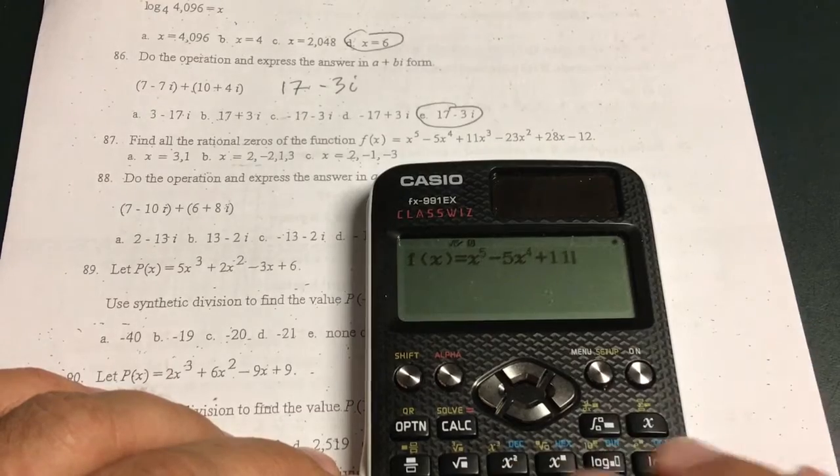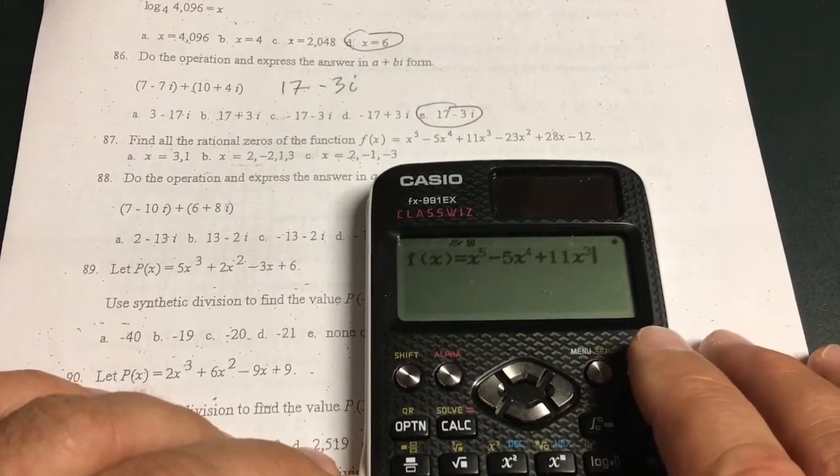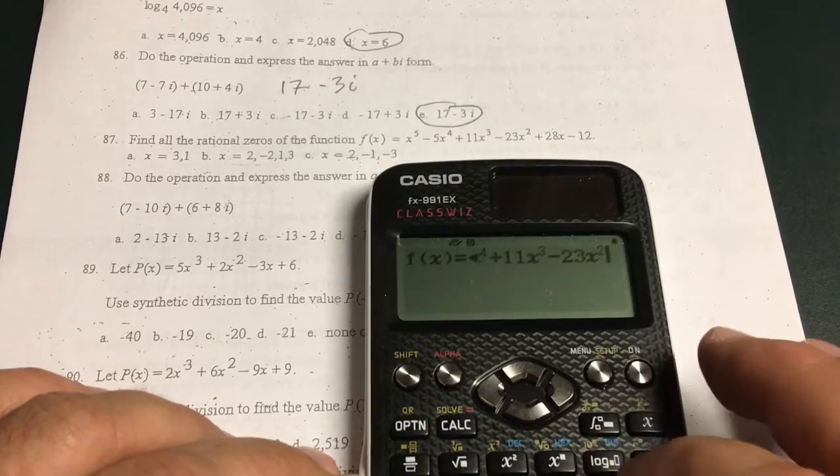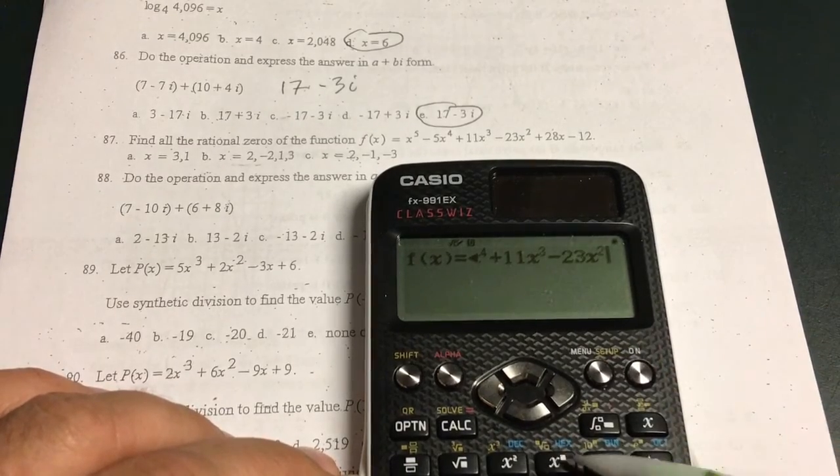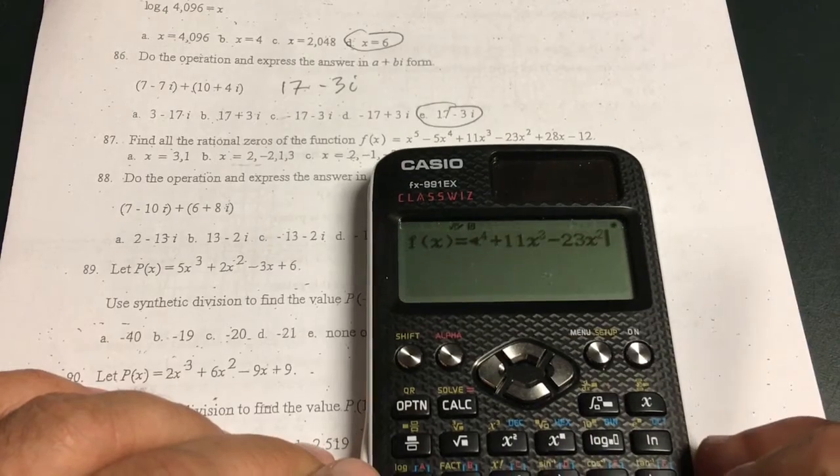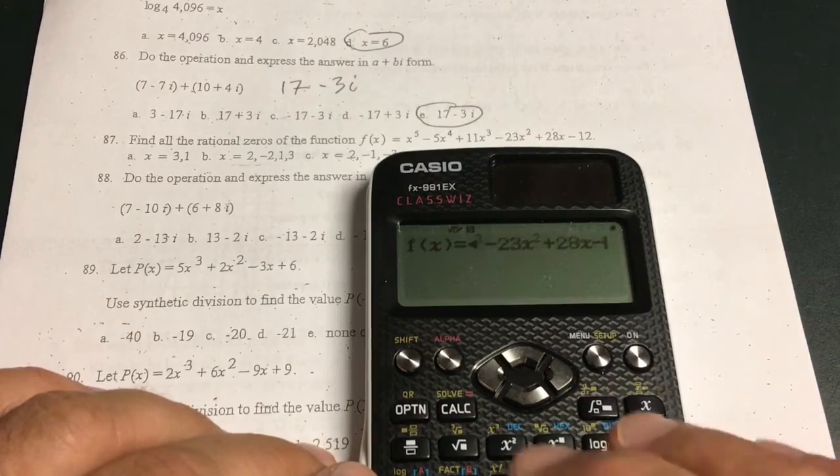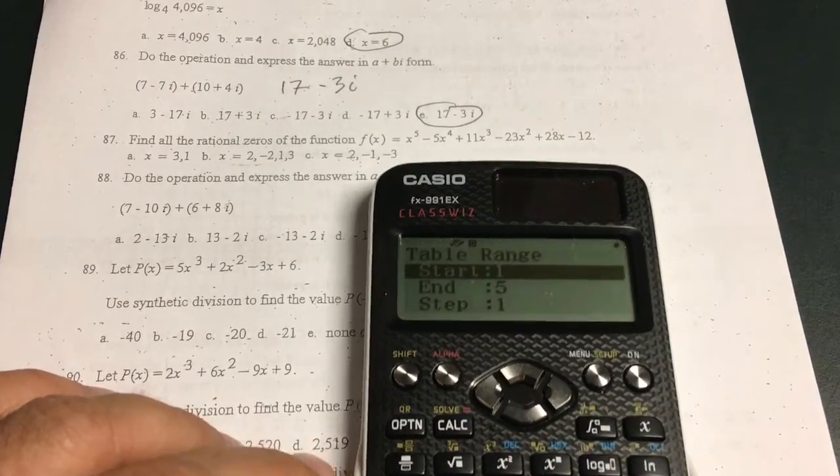I messed up. I have to down arrow. Now minus 5x to the 4th. Right arrow. Down arrow. Plus 11x to the 3rd. Right arrow. Bring it down. Minus 23x squared. I just hit the x squared button on that one instead of the Xbox button. Just the x squared button. Plus 28x. Minus 12. Enter. Enter.